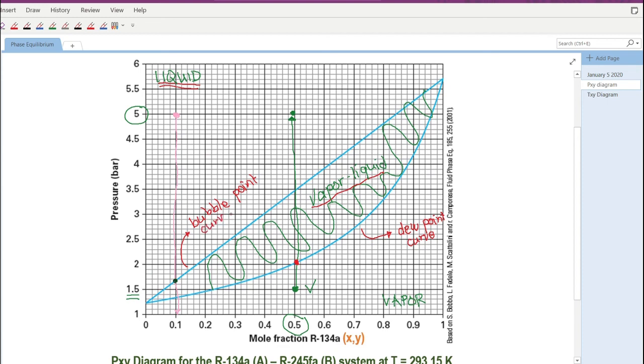So, the corresponding pressures that will, focusing on the bubble point curve, the corresponding pressures that will give you the first bubble of vapor as you go down from liquid to the vapor phase. They're actually called bubble point pressure.